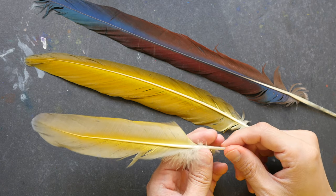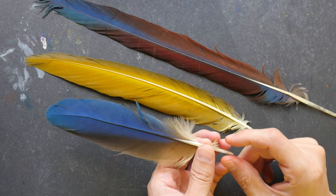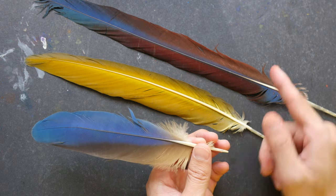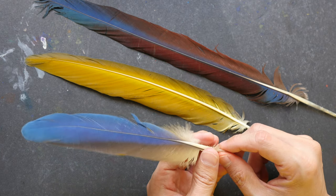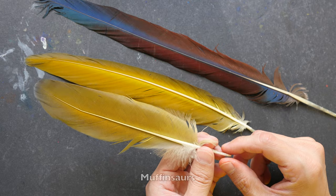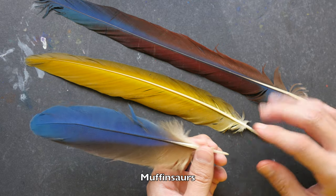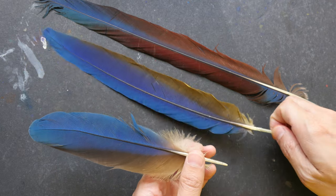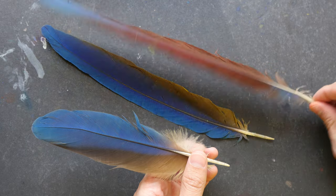In today's video I'm going to be drawing with these beautiful feathers from Macaw parrots. These were given to me by a friend Stephanie, aka Muffinsaurus. So these are the three feathers that I have and you can see the colors on each side, they are different.